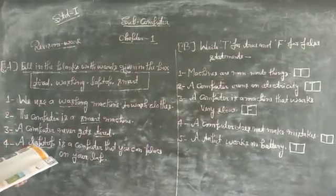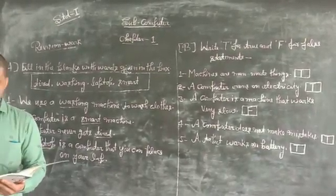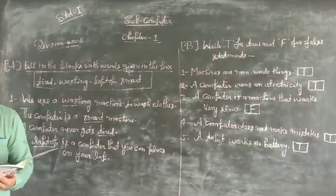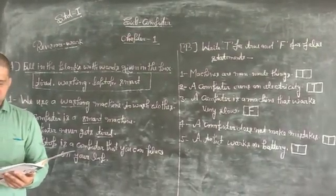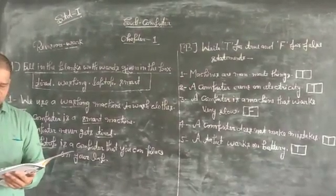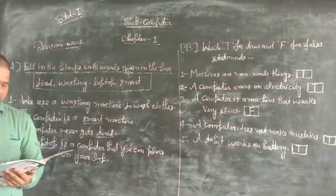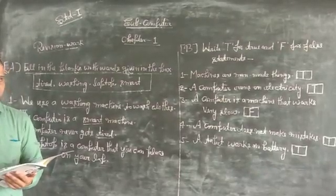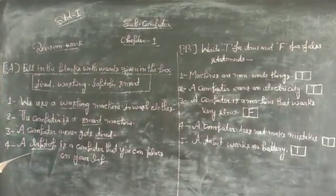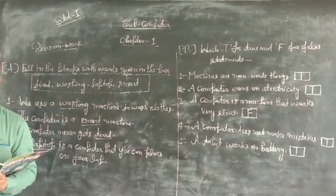We see many things around us. Many of these things are given to us by nature. Such things are called natural things.